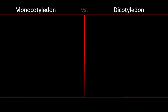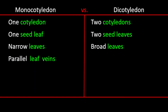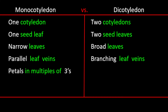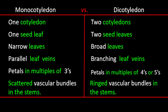A quick summary of the differences: monocot has one cotyledon, dicotyledon has two cotyledons. Monocot has one seed leaf, dicot has two seed leaves. Narrow leaves for monocot, broad leaves for dicot. Parallel leaf veins for monocot, branching leaf veins for dicot. Petals in multiples of threes for monocot, petals in multiples of fours or fives for dicot. Vascular bundles in a scattered fashion for monocot, in a ring pattern for dicot.